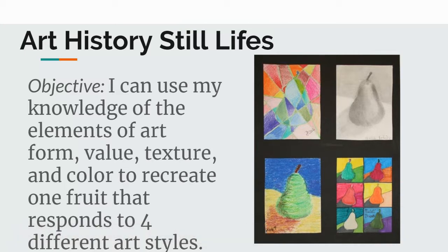I'm modifying it so that we're only going to do two of the mini series. Initially I had students do four different still lifes — each still life represented a different stylistic period or art movement. Instead, you're just going to pick two. The first one is the graphite pear or apple, and we're all going to use graphite pencil for that.